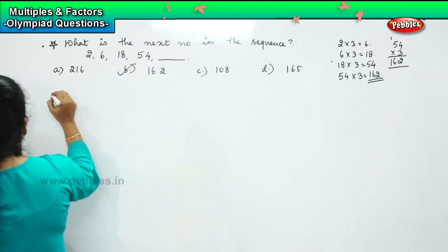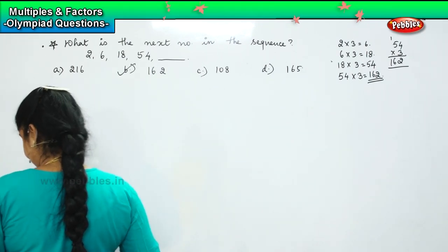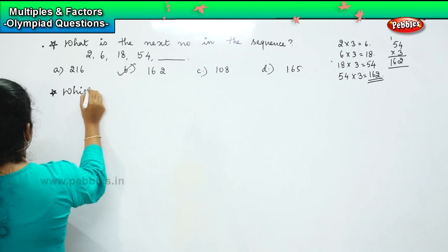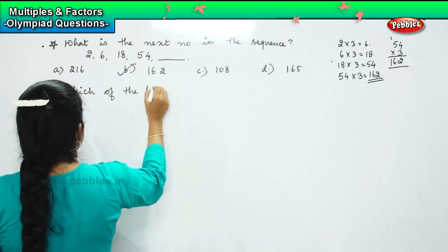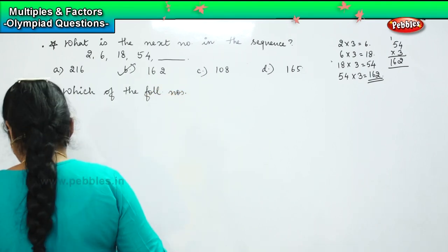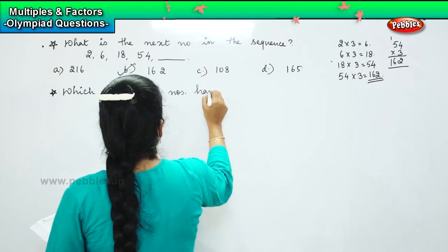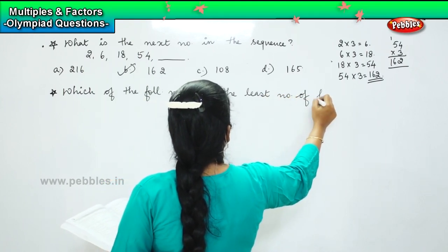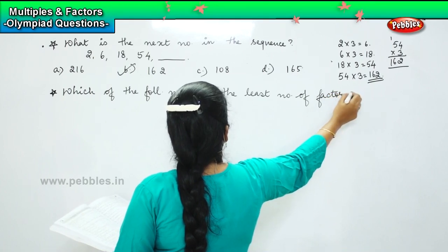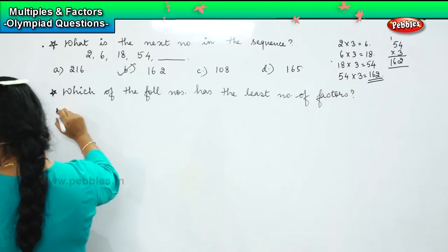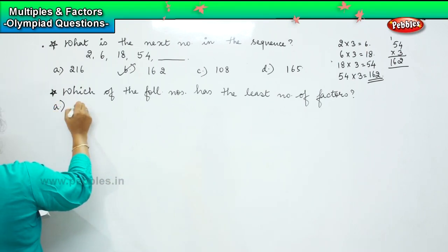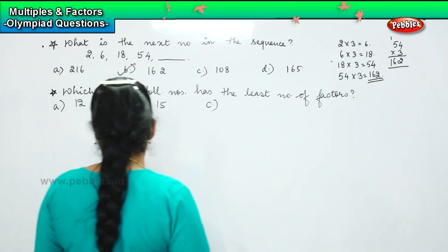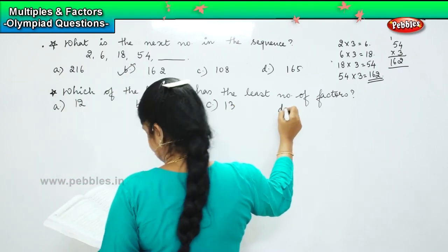The next question for you is: which of the following numbers has the least number of factors? The options are: Option A, 12. Option B, 15. Option C, 13. And Option D, 20.